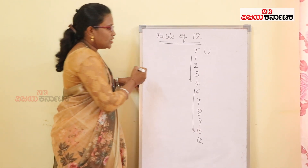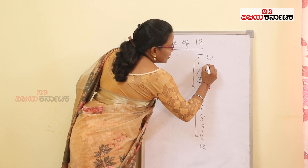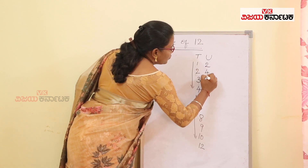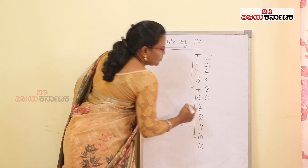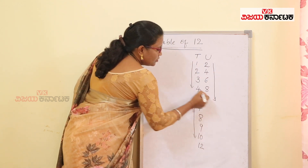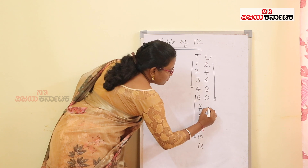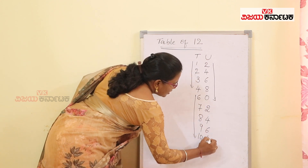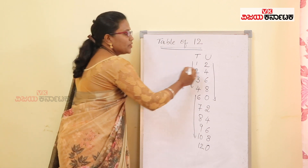In the units place, you can add numbers: 2, 4, 6, 8, 0 — so 2, 4, 6, 8, 0. Then repeat that pattern: 2, 4, 6, 8, 0.